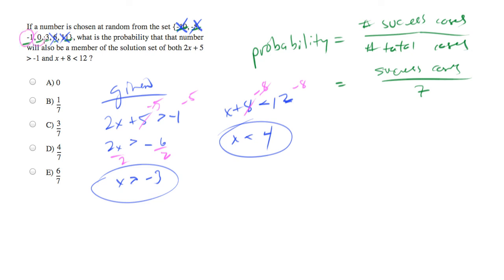So there are actually three success cases, negative 1, 0 and 3, which we can plug in to our probability formula. So our probability is 3 success cases over 7 possible cases, which is your answer C.